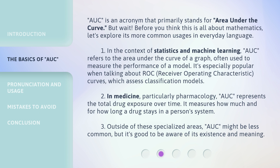In the context of statistics and machine learning, AUC refers to the area under the curve of a graph, often used to measure the performance of a model. It's especially popular when talking about ROC — Receiver Operating Characteristic — curves, which assess classification models.